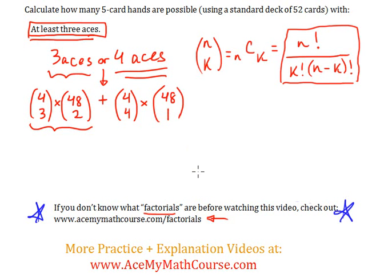So let's work that out. But I will use the calculator. Four combination three is just four. 48 combination two works out to be 1128.